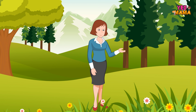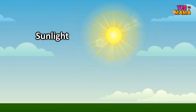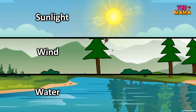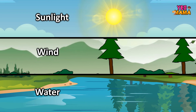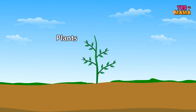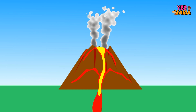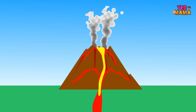We can use other sources of energy. We can use energy made from renewable resources. We can use sunlight, wind and water. We can use energy from plants. We can also use energy from the ground.